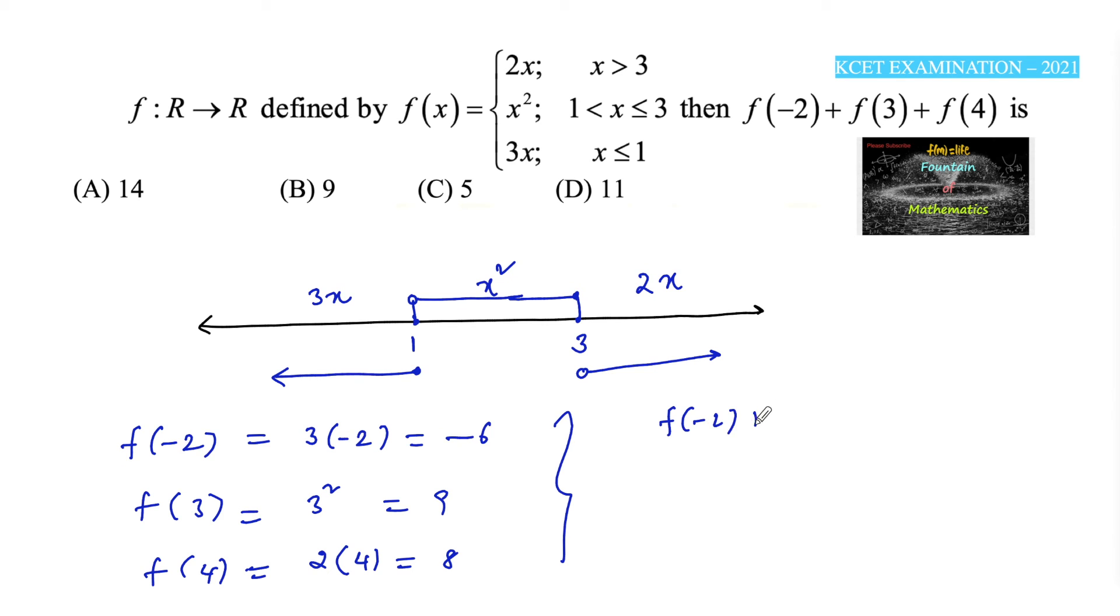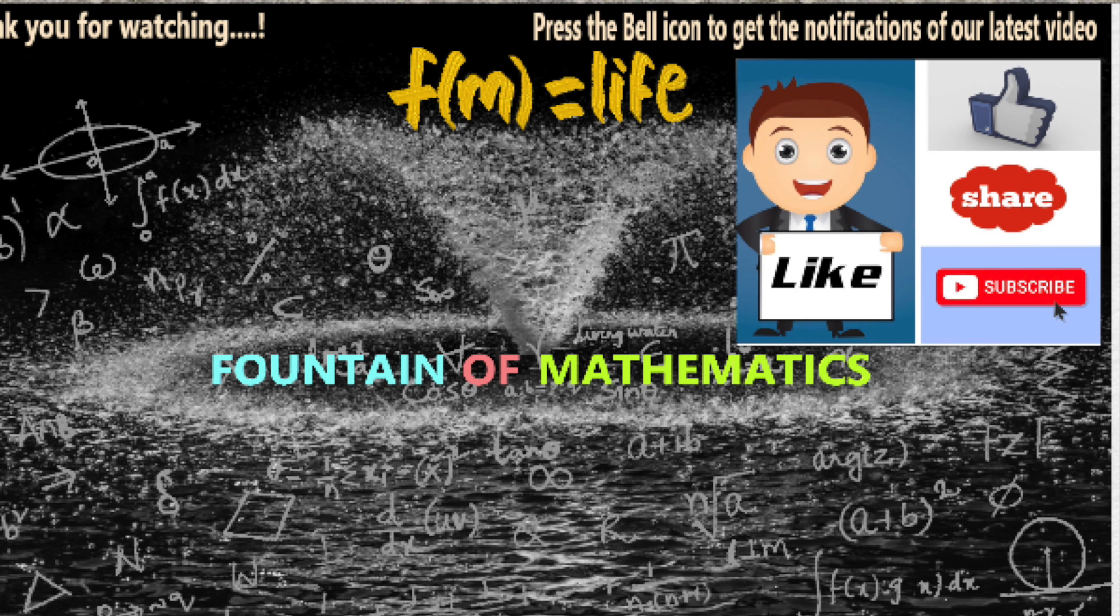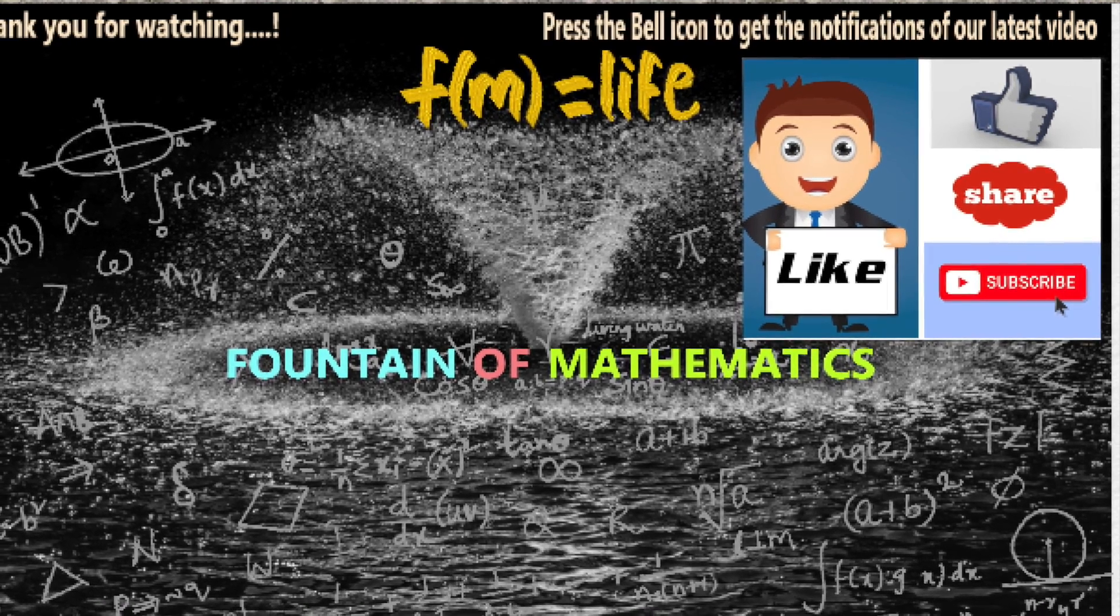Therefore, f(-2) + f(3) + f(4) equals -6 + 9 + 8. That's 9 + 8 = 17, and 17 - 6 is 11. So 11 is the answer, which is option D.